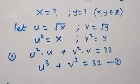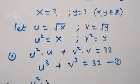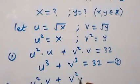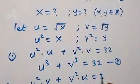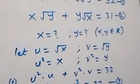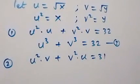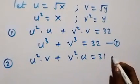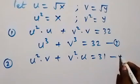Equation 2 now becomes: x times root y plus y times root x, which is u squared times v plus v squared times u, and this equals 31. Let's call this equation 4.